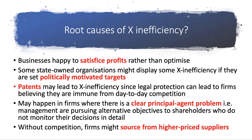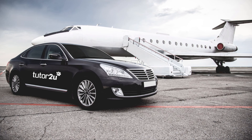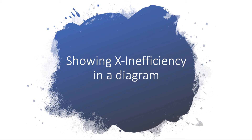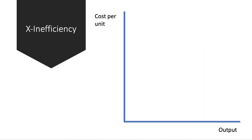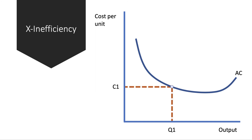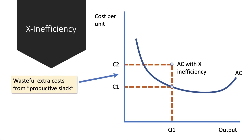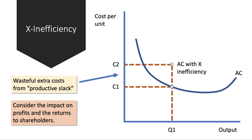How do we show X-inefficiency in a diagram? With cost per unit on the y-axis and output on the x-axis, here is a typical unit cost curve with some scale economies, reaching a minimum efficient scale and then some diseconomies of production. The key point is that with X-inefficiency, if a firm is producing output Q1, ordinarily the cost would be C1. But with X-inefficiency the cost is going to be higher — if you're producing Q1, your unit cost might be C2 instead of C1. That vertical distance essentially represents the wasteful extra cost from so-called productive slack.